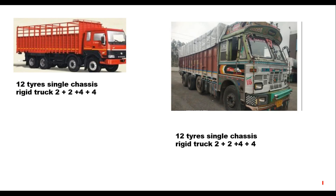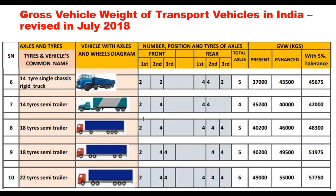The 12-tire single chassis rigid truck can come in two slightly different configurations with the same number of tires and the same gross vehicle weight. Other categories include the 14-tire single chassis rigid truck, 14-tire semi-trailer, 18-tire semi-trailer (two variants), and 22-tire semi-trailer. Their present limits have been revised in July 2018 with a 5% tolerance.